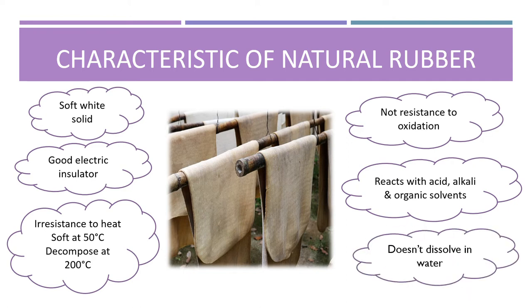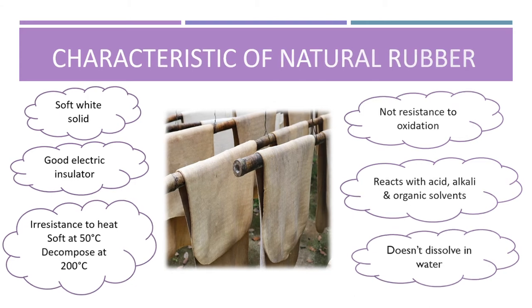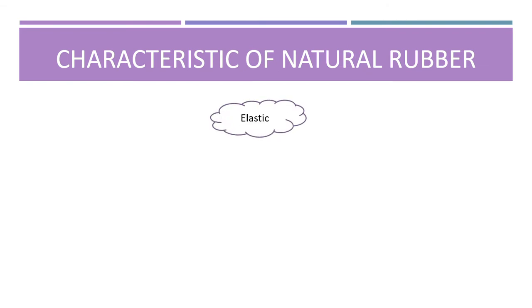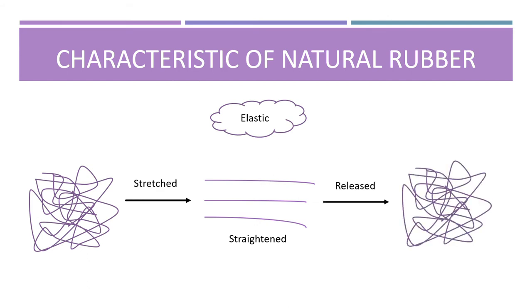alkali and organic solvents. However, it does not dissolve in water. The most important characteristic of natural rubber is that it is elastic. When natural rubber is stretched, the tangled polymer chains become straightened. Releasing the natural rubber causes the polymer chains to return to their original state.